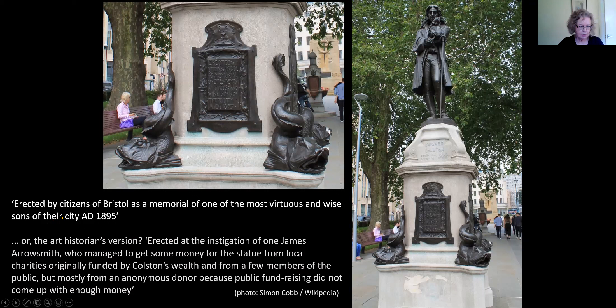But I'm interested in the 'citizens of Bristol' part — it's pretty sweeping. It would have been more accurate to say something like 'erected at the instigation of one James Arrowsmith, who managed to get some money for the statue from local charities originally funded by Colston's wealth, and from a few members of the public, but mostly from an anonymous donor, because public fundraising didn't come up with enough money.' But that's rather inelegant and would have been hard to fit onto the base.